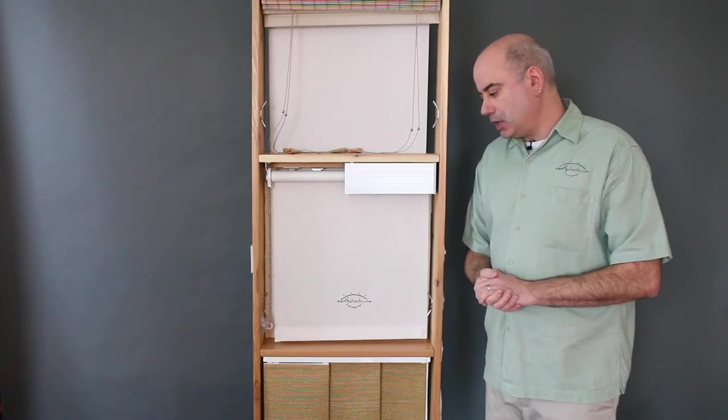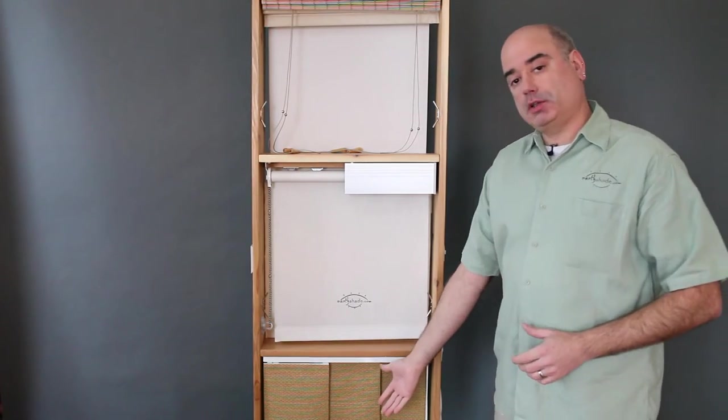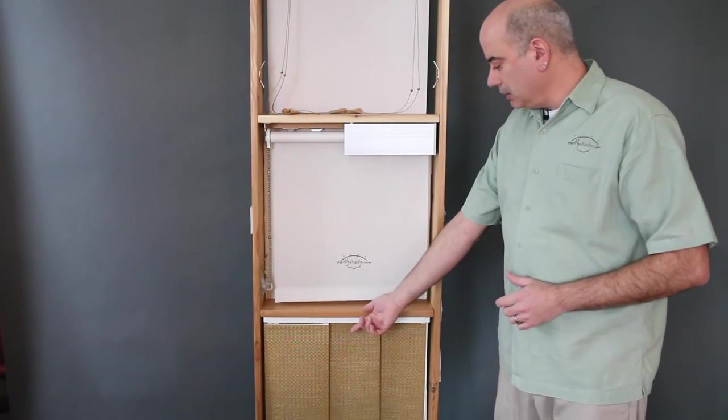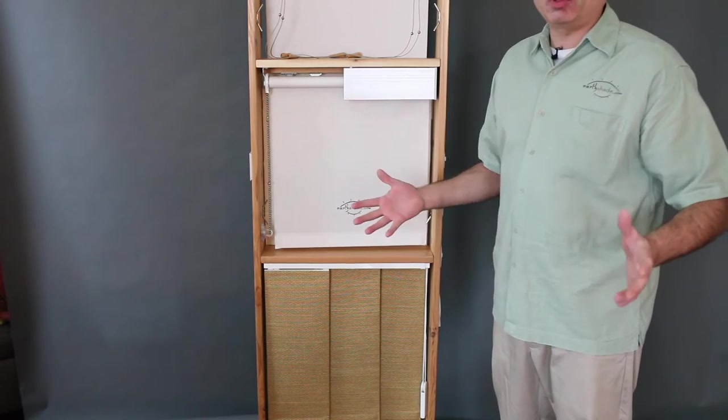The last system I'd like to feature today is going back to our Happy Shades collection. It features the Happy Shades chemical-free fabrics. It is our panel glide system. This system is wonderful for patio doors and other large openings.